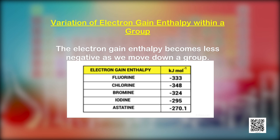Electronegativity generally increases across a period from left to right — say from lithium to fluorine — and decreases down a group, say from fluorine to astatine in the periodic table. This trend is similar to that of ionization enthalpy and is clearly relatable to metallic character as well. As electronegativity increases, non-metallic character increases; as electronegativity decreases, metallic character increases.